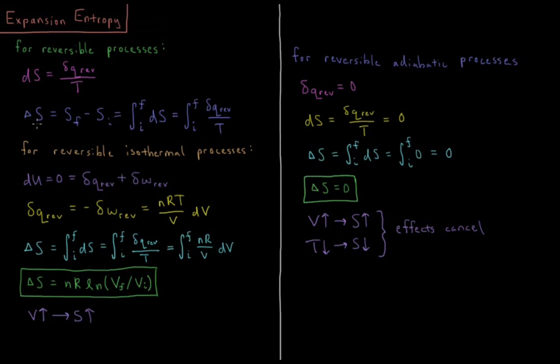Delta S during a process is the final entropy minus the initial entropy, which equals the integral from initial to final state of dS, which equals the integral from initial to final state of dQ_rev over T.